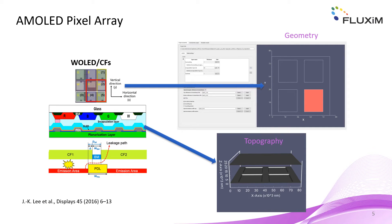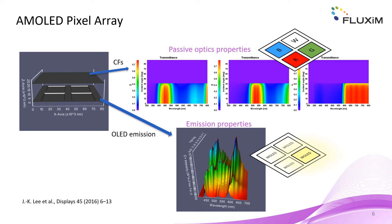We will first focus only on optical crosstalk. We use a similar structure as presented by Lee and co-workers. In order to mimic the full display, we simulate the smallest repeating unit, which consists of four pixels — red, green, blue, and white — and use periodic boundary conditions. The pixel and color filter layout is input as interface geometry, and the PDL structure between the pixels is stored in the topography information. Further input is required for each interface: we have to provide the optical properties of the different color filters as well as the white OLED emission spectrum as a function of emission angle.